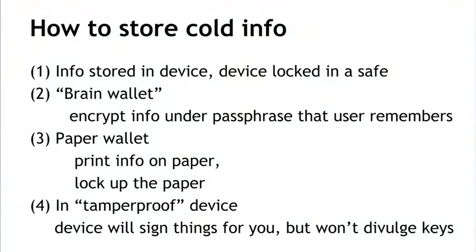With that in place, we can talk about the different ways cold information can be stored. The first way is to store the information on some kind of device — a laptop computer, a mobile phone or tablet, or a thumb drive — and just put that device in a safe. We store the information on the device, turn it off, and lock it up. If somebody wants to steal this, they have to get into our locked storage and take the device.